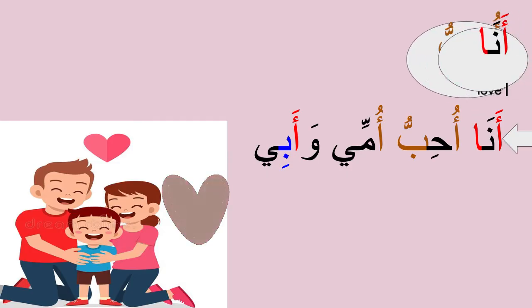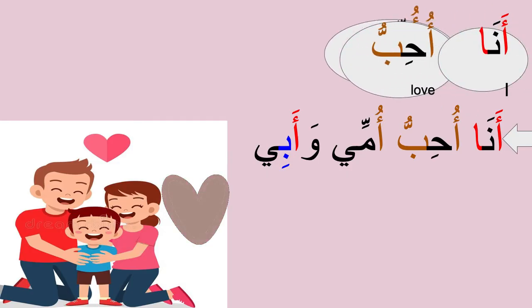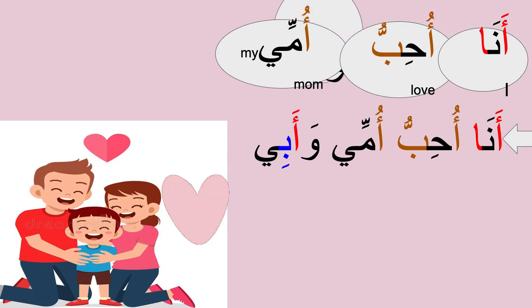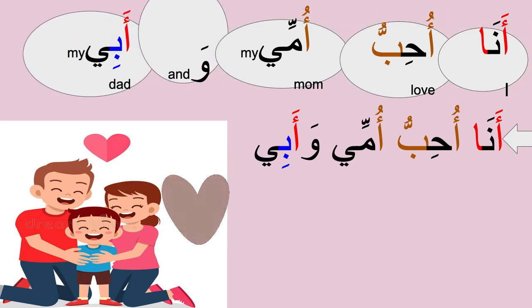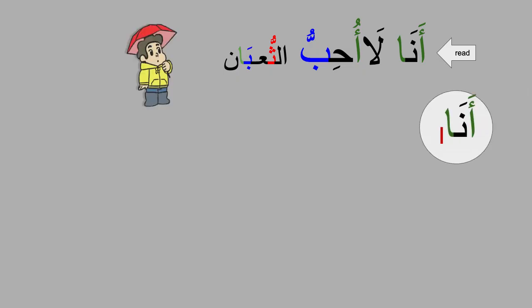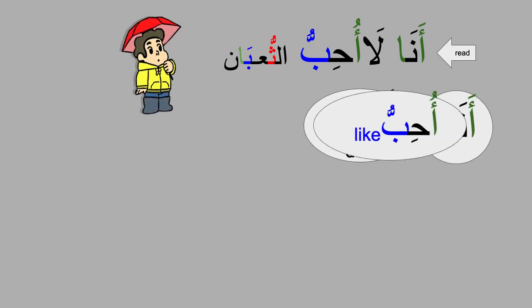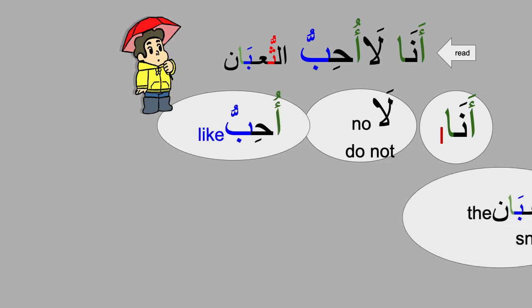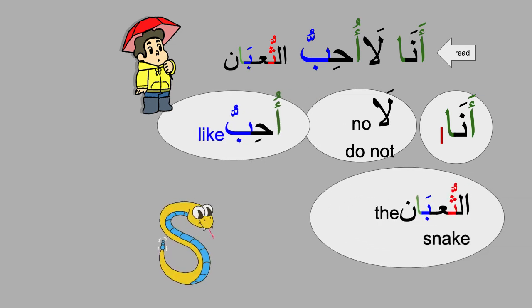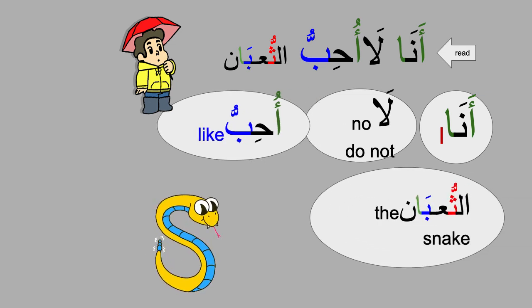Ana uhibbu ummi wa abi — I love my mother and my father. Ana la uhibbu al-tha'ban — I don't like the snake.